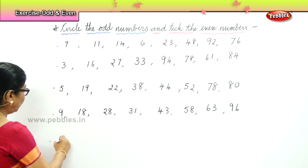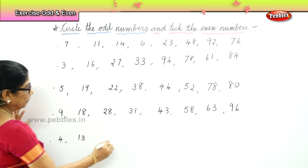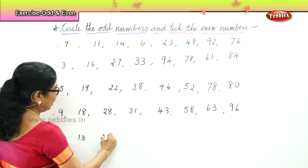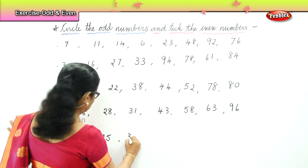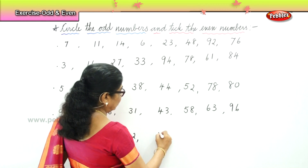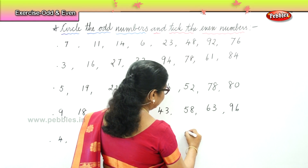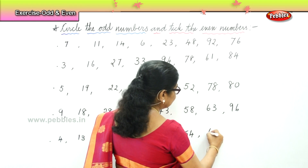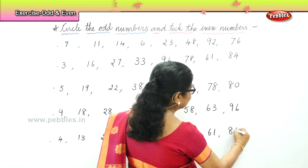One more set. Set E: You get 4, 13, 25, 32, 47, 54, 61, and 86.